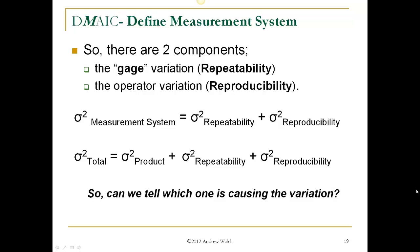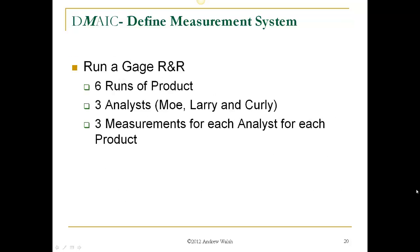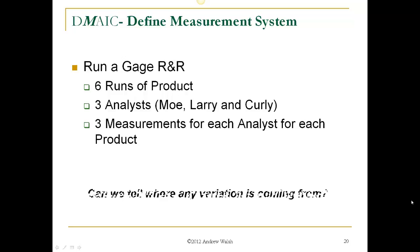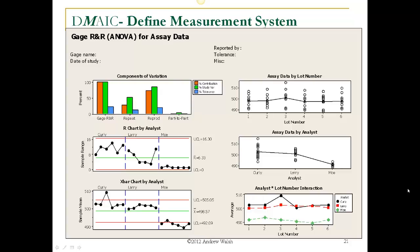Can we tell which component is causing the variation? Let's look at a gauge R&R with six runs of different products, three analysts — Moe, Larry, and Curley — and three measurements per analyst per product. That's a standard gauge R&R with 27 results total. Can we figure out where any variation is coming from? Let's look at the output from a Minitab run.